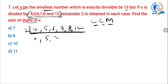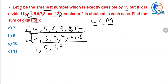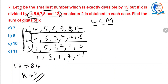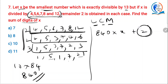Working the LCM of 4, 5, 6, 7, 8 and 12: 5×2=10, 10×4=40, wait — 2×3=6, 6×2=12, 12×7=84, 84×10=840. LCM is 840. The required number is of the form 840x + 2 because the remainder is 2. Also, the number must be exactly divisible by 13.